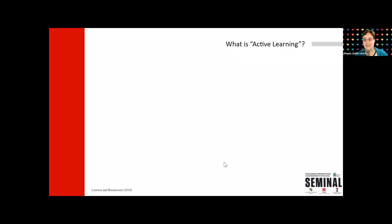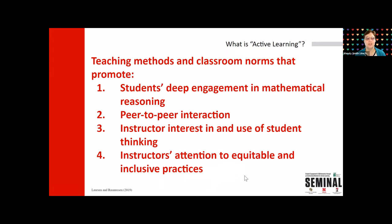The definition our project uses comes from Larson and Rasmussen, published in 2019 — Chris Rasmussen is also one of our co-PIs. When we talk about active learning, we're talking about teaching methods and classroom norms that promote students' deep engagement in the content, peer-to-peer interaction, instructor interest in and use of student thinking in instruction, and instructors' attention to equitable and inclusive practices. We know that just putting students in groups does not automatically make things more equitable — in fact, it can perpetuate implicit bias. So there needs to be explicit attention to equity and inclusive practices.